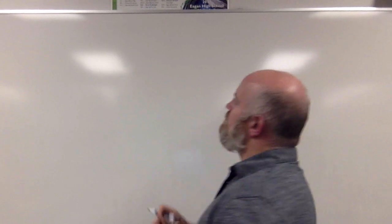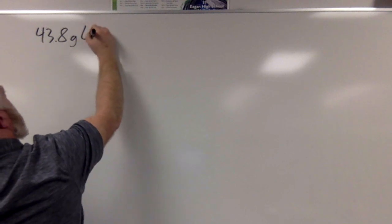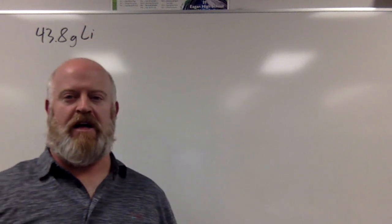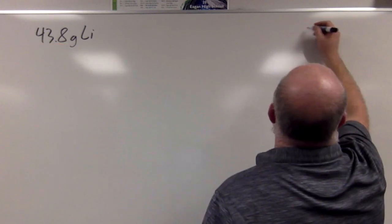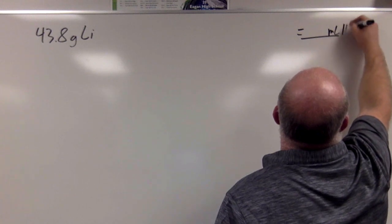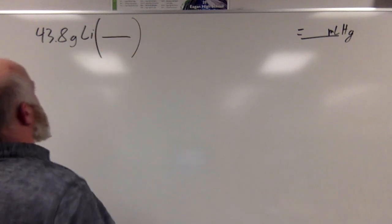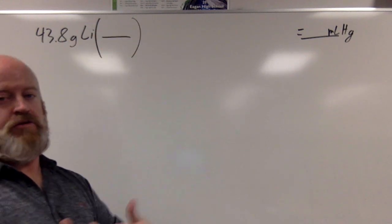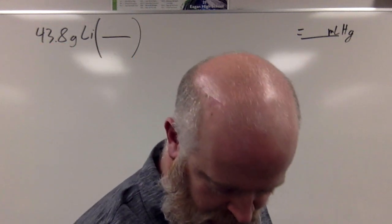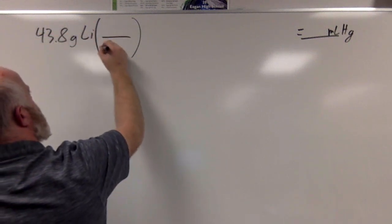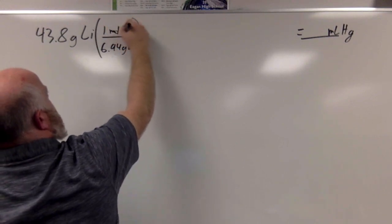So we have 43.8 grams of lithium, and we want to find how many milliliters of mercury we want to produce. So at the end of this thing, we want this to be in milliliters of mercury. My first step: I have grams of lithium, I'm going to convert this to moles. So I know that lithium, if we take a look at its atomic mass, it's 6.94. So we have 6.94 grams of lithium for every one mole of lithium.